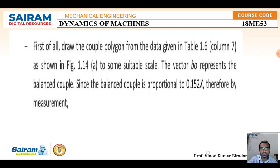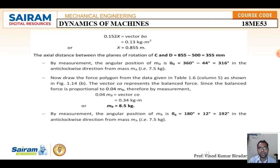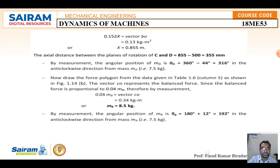From the couple polygon: 0.152 × X = length of vector B to O, giving X = 0.855 m = 855 mm. Axial distance C to D = 855 − 500 = 355 mm. The angle theta D = 360° − 44° = 316°. From the force polygon: vector C to O = 0.04 × M_B, giving M_B = 8.5 kg. Theta D = 180° + 12° = 192°.